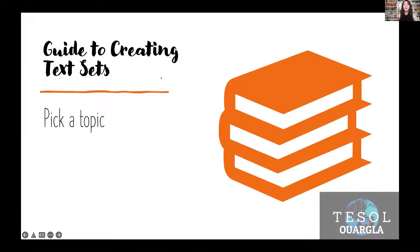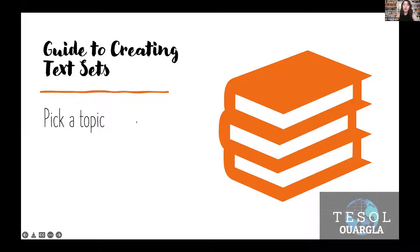The first step to creating a text set is to pick a topic. Even if you're an English teacher, a science teacher, a chemistry teacher — you have a topic. So the first thing to do is pick a topic. Let me show you how Sam did that.